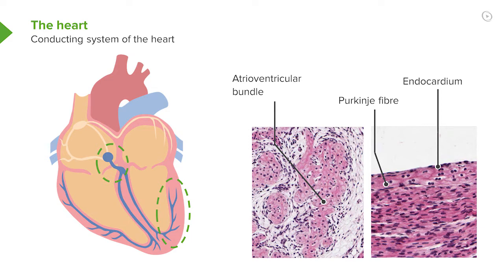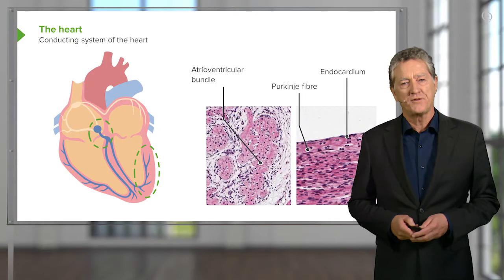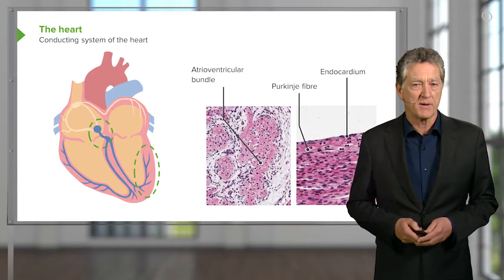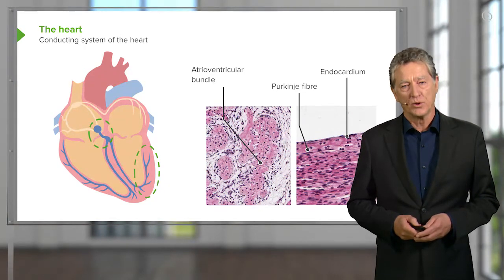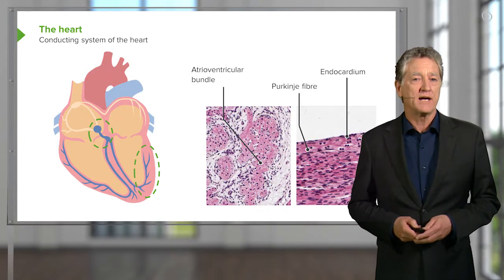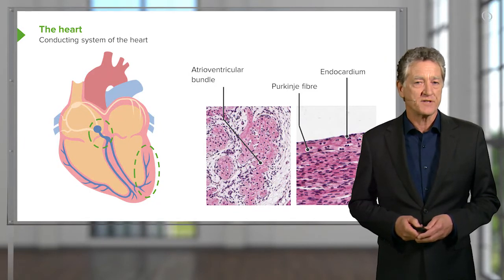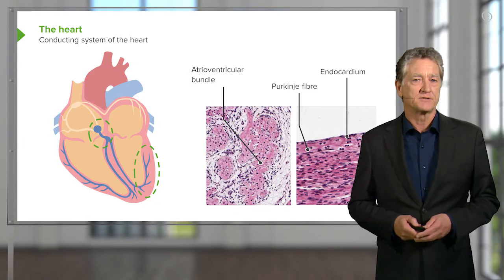Let me stress that these conducting fibres of the heart are not nerves. They're specialised cardiac muscle. If you look at the diagram of the heart, the blue circular structure and the blue lines running down through the myocardium represents these conducting fibres.